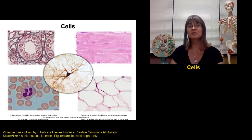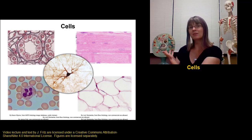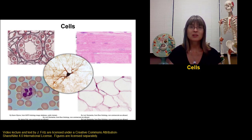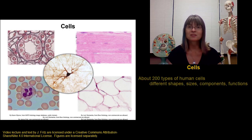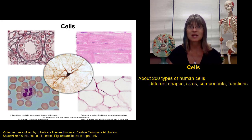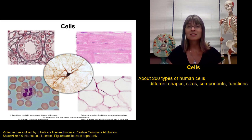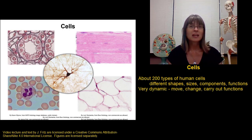Thanks to countless boring pictures and still models of cells like the one behind me, a lot of people have a very static image of a cell. But cells are actually highly variable. There are lots of different types of cells, different sizes of cells. They have different components and different functions. And cells are very dynamic — they change, they move, they carry out all the functions of life.